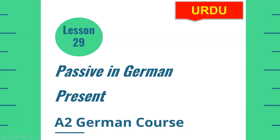Assalamu alaikum and welcome to Germany for Student channel. Our German language course A2 level ka lesson number 29 hai. Lesson number 29 mein hum ek bahut bade topic ko start karne ja rahe hain jo kya hai — passive in German.